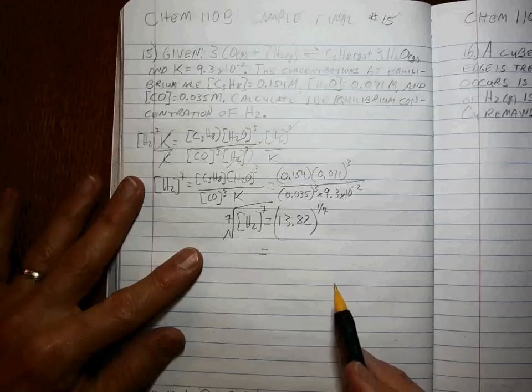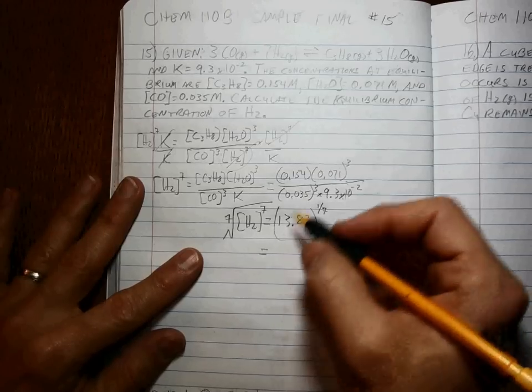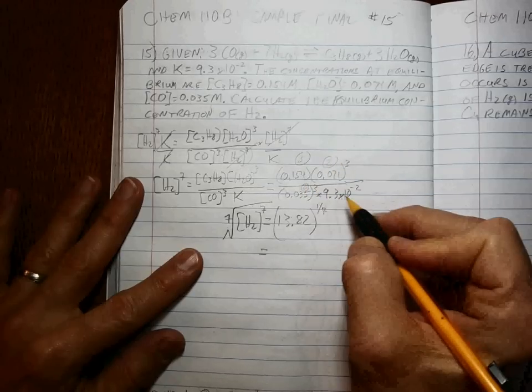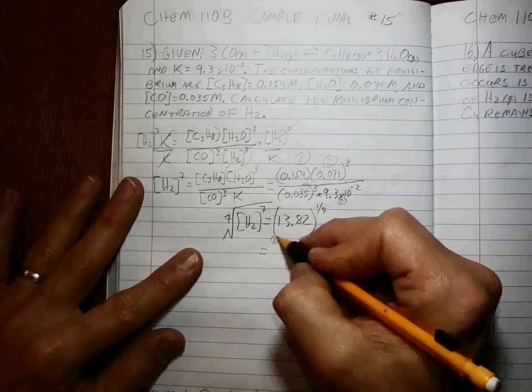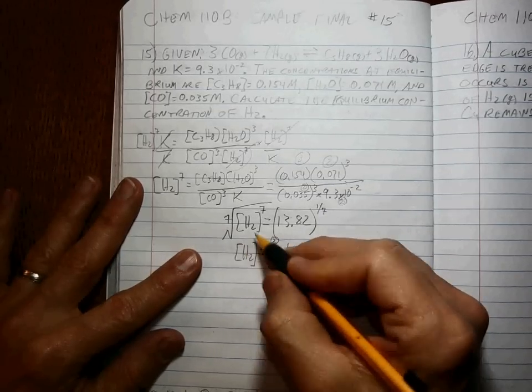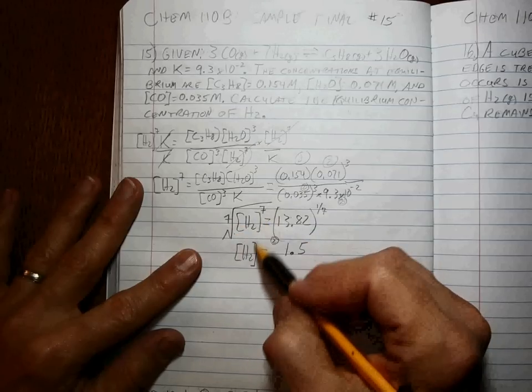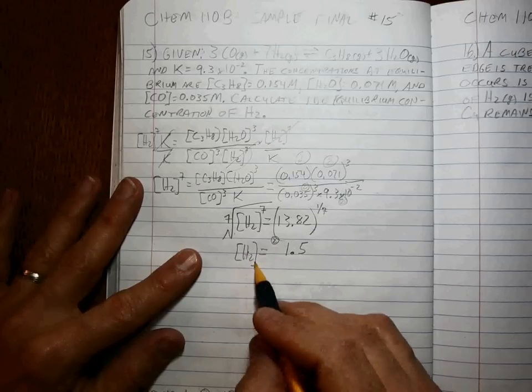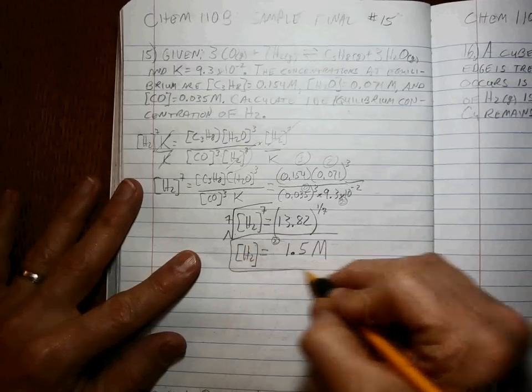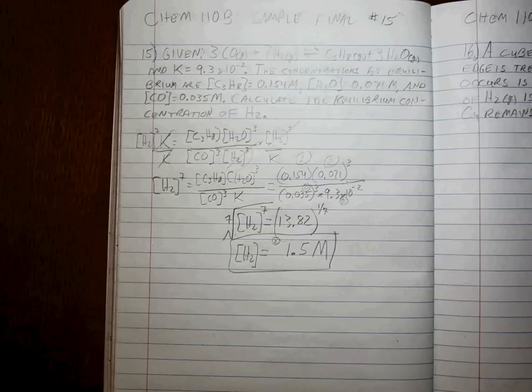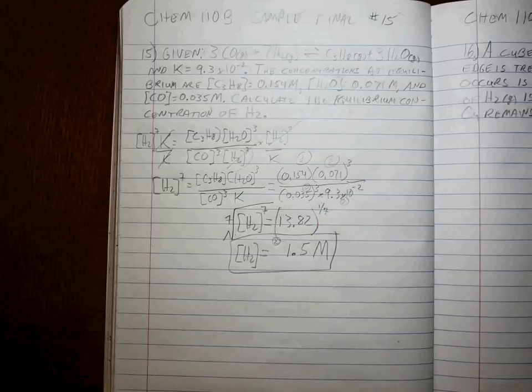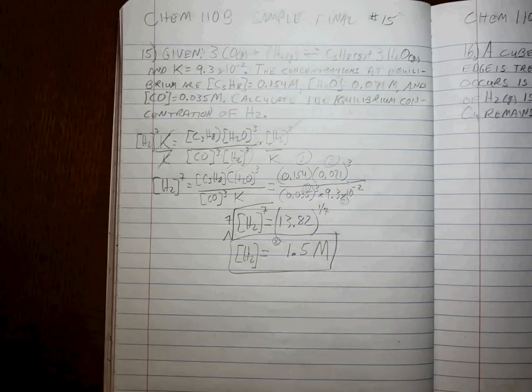Whatever it takes so that you end up with two sig figs, right? Because this is three, this is two, this is two, this is two, so the answer is going to be two: 1.5. And since the seventh root of something to the seventh power is just equal to the something, now we're solving for the H2 concentration, so you must show the units in moles per liter. Be careful how you punch things in your calculator and with your sig figs too.